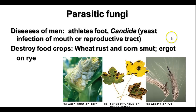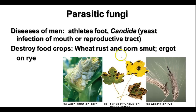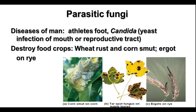Some parasitic fungi cause a number of different diseases. Athlete's foot is a type of fungus parasitic on humans. Candida is a yeast infection that can occur in the mouth or the reproductive tract — another kind of parasitic fungus that humans sometimes have. There are also fungi that can destroy food crops. Smut disease on corn makes it gelatinous, and tar spot fungus on maple leaves damages the leaves and the tree.